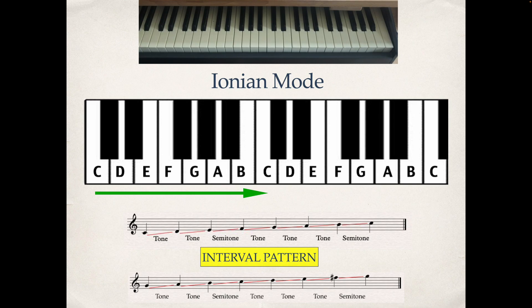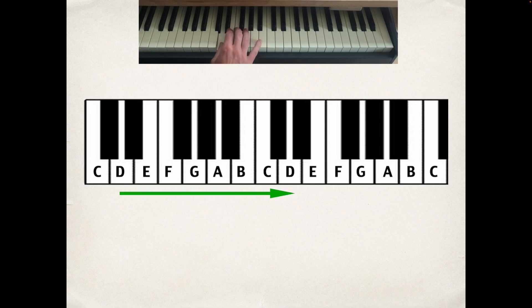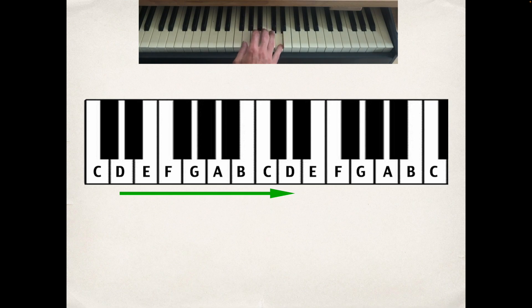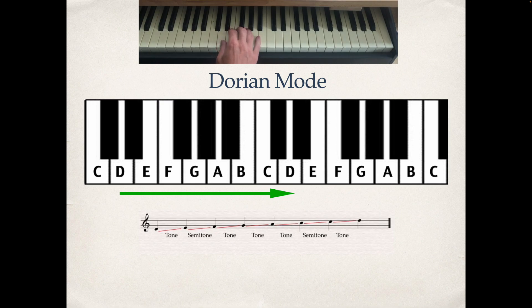That's the first of the authentic modes. For the second one, let's try starting on D. We'll repeat the process — start on D and go to the D above it. It has its own distinctive sound and it is the Dorian mode, with its unique interval pattern. The Dorian mode is quite popular.